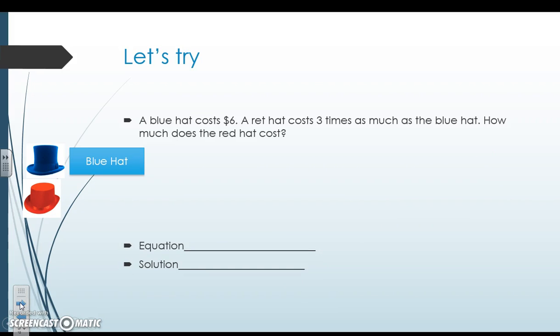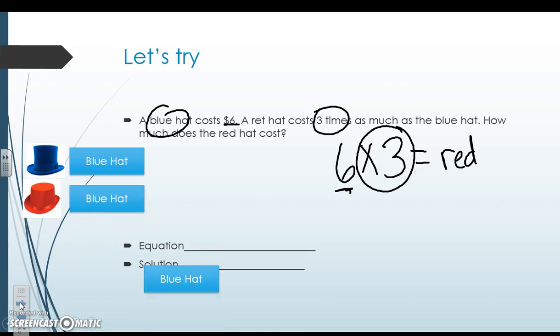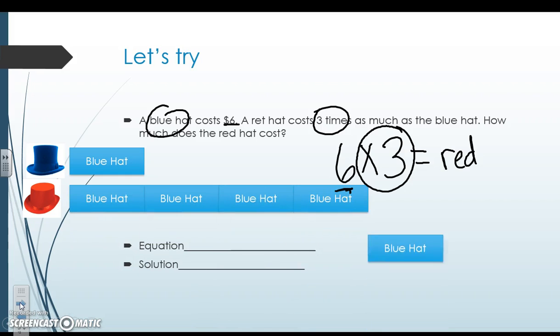Here's another example. A blue hat is six dollars. The red hat is three times as much as the blue hat. So now we're looking for the red hat. So blue hat is six dollars. Here's where I got my six. Red hat is three times. So I need to do three times the blue hat.